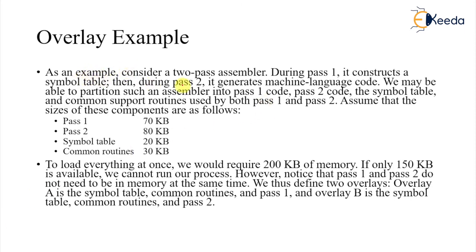As an example, consider a two-pass assembler. During pass one it constructs the symbol table, and during pass two it generates the machine language code. We may partition the symbol table and pass one and pass two code, with common support routines used by both passes. Suppose pass one has size 70K, pass two size 80K, and symbol table and common routines are 20K and 10K respectively.